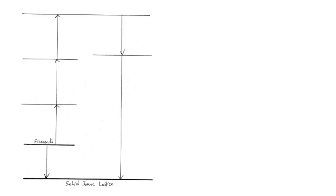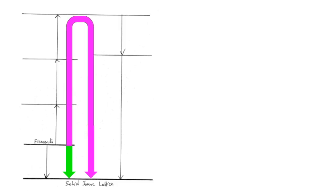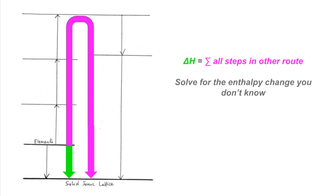Quick revision video for Born-Haber cycles. A Born-Haber cycle is an enthalpy cycle that uses Hess's law to state that the enthalpy change for this route from elements to the solid ionic lattice is equal to the sum of the steps going the other way. The enthalpy change for the green route is the same as the sum of all the steps in the pink route, and we use a Born-Haber cycle to solve for an enthalpy change that we don't know.